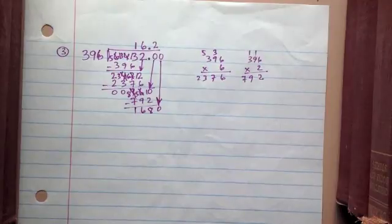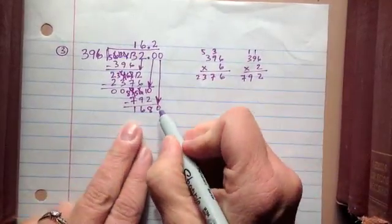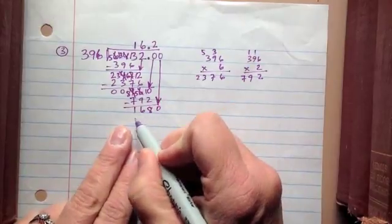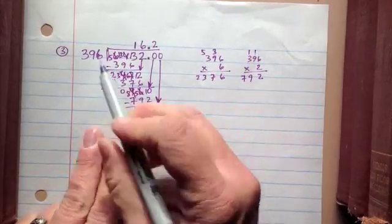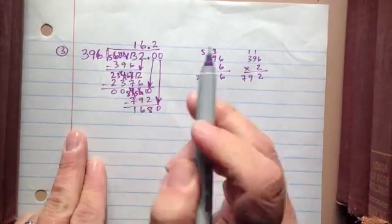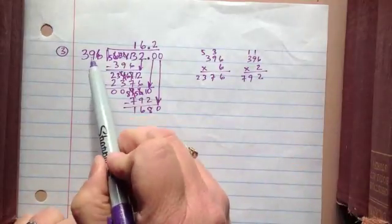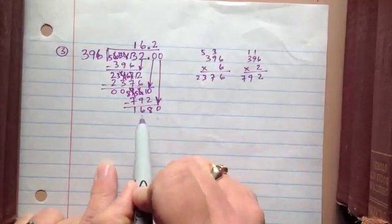So now I am going to put another zero here, and I have 1680 divided by 396. How many, about how many 400s would go into about 1,600?